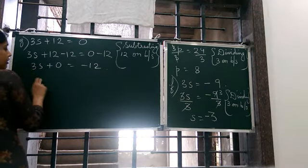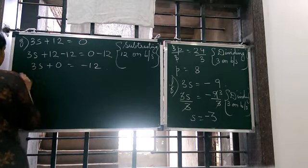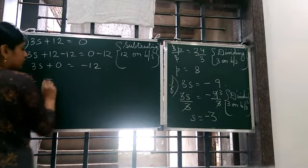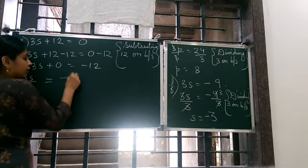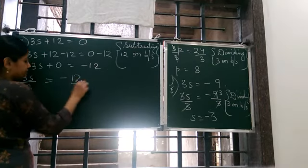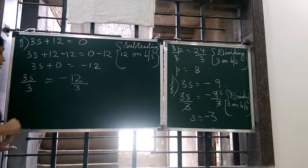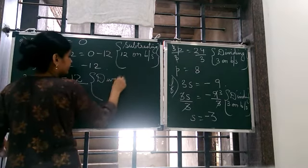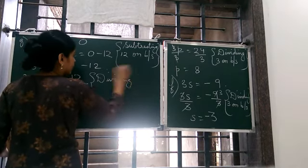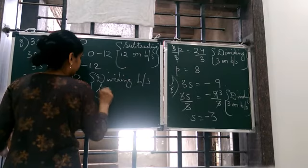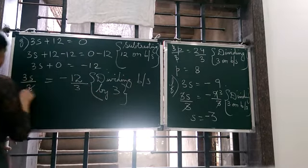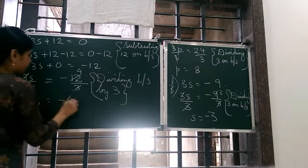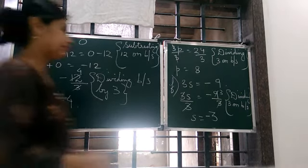So 3s, this becomes 0, and this becomes minus 12. Now what to do? We need to remove this 3. So we divide by 3 on both sides. Dividing both sides by 3. S is equal to minus 4. This completes G.